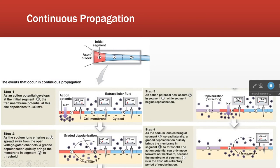We have two different kinds of action potential propagation in our human systems. One is continuous, which is slow but hugely ancient evolutionarily. The other form is saltatory conduction or myelinated conduction, which is very fast but only evolved much, much later.